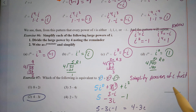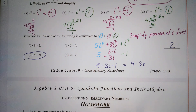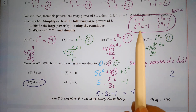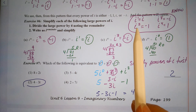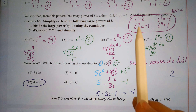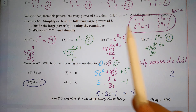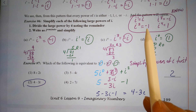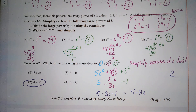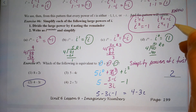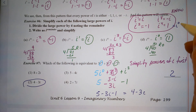That's choice 2. To summarize what you want to memorize: i is equivalent to the square root of negative one, i squared equals negative one, i to the third equals negative i, i to the fourth equals one — which is also equivalent to i to the 0 equals one.